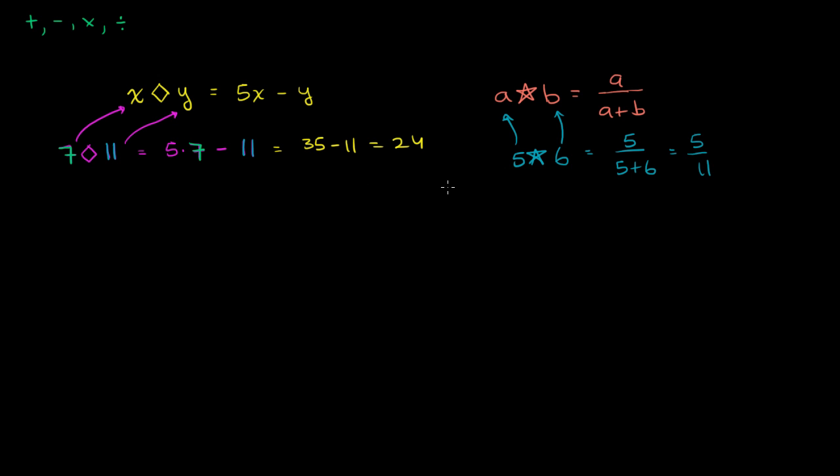And then you can compound them. We haven't defined any order of operations for these particular operations, so we're going to be careful to use parentheses when we put some of these together. You could do something like negative 1 diamond, 0 star 5. Once again, we just focus on parentheses because that's the only thing telling us what to start on first.